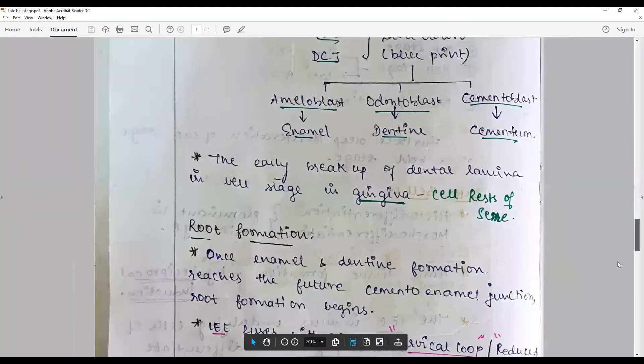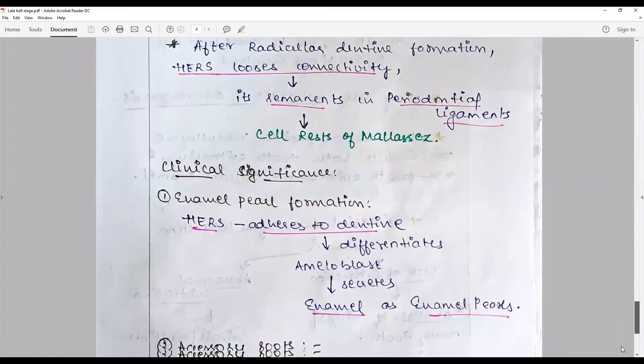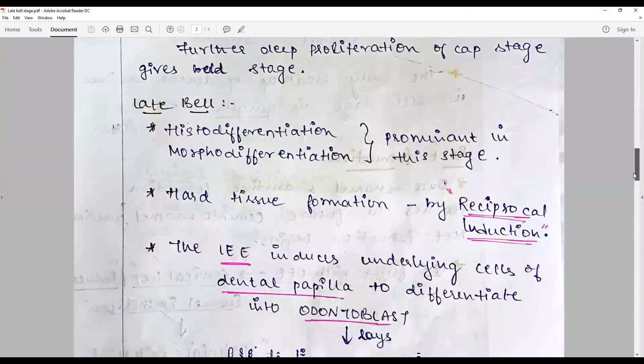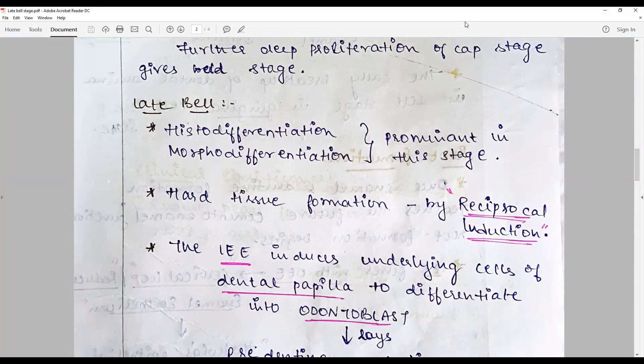And this is the whole structure of what we call it as late bell stage. It should be compulsorily accompanied by a neat histological diagram. Okay, with that we come to the end of this session on late bell stage. Stay connected for more questions, more answers. Subscribe to the channel and stay safe.